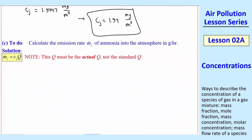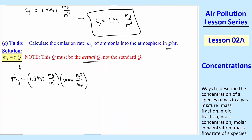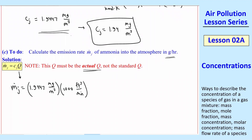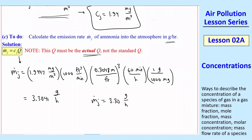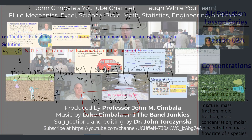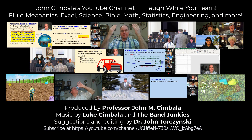Finally, calculate the emission rate into the atmosphere in grams per hour using m_dot_j = cj * q, where q must be the actual flow rate. Plugging in: 1.9447 mg/m³ (using extra digits to avoid roundoff) times 1,000 actual CFM, then converting — (0.3048 m/ft)³, 60 min/hr, and 1 g = 1,000 mg — gives a final result of 3.30 grams per hour. Thank you for watching; please subscribe to my YouTube channel for more videos.